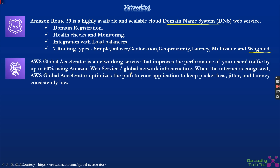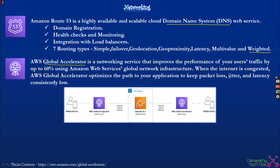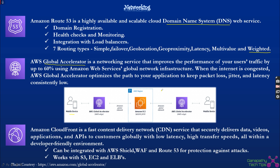AWS Global Accelerator is a newer introduction to the networking family, providing global performance using the AWS Backbone Network. For example, if a mobile device accesses an EC2 instance in an AWS region over the regular internet it takes a long time. Instead, using Global Accelerator with the AWS Global Network saves a lot of packet loss, jitter, and latency, providing high performance.